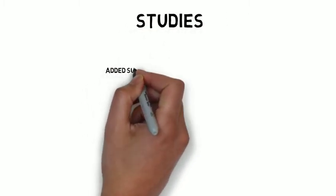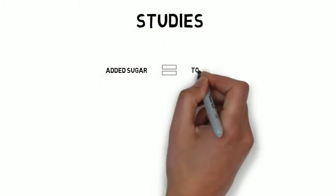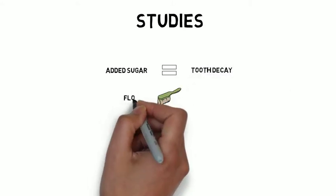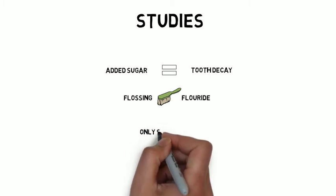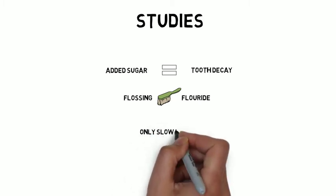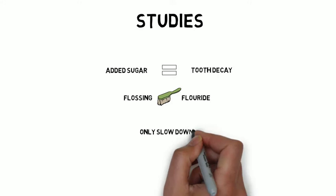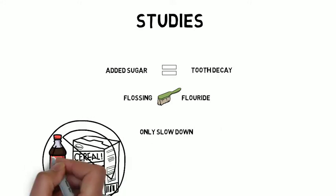A group of studies run a few decades ago found that added sugar is the main cause of tooth decay, and that brushing, flossing, and using fluoride only serve to slow down the harmful effects sugar has on your teeth. The only way to stop tooth decay completely is to not consume added sugars at all.